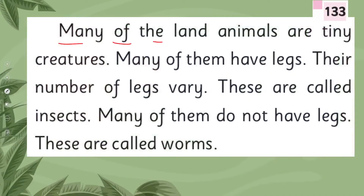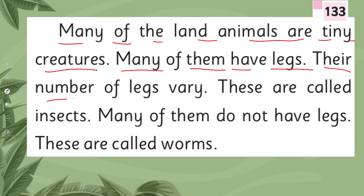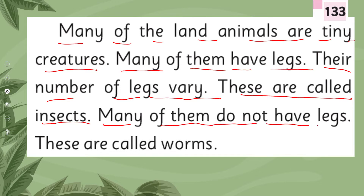Many of the land animals are tiny creatures. Many of them have legs and their number of legs varies — these are called insects. Many of them do not have legs — these are called worms.